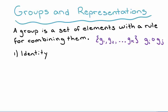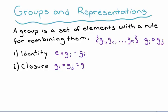The first requirement is identity, which demands that there is some element that exists in the group that we call an identity. That element, which we'll abbreviate with E, when combined with any other element, gives us back the same original element. The second requirement is closure, and closure insists that the combination of some element Gi with any other element Gj yields some element that is also contained in the group. We'll write that Gi combined with Gj yields Gk, and closure demands that Gk is an element of the group.